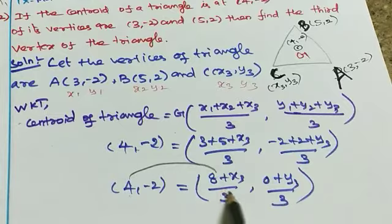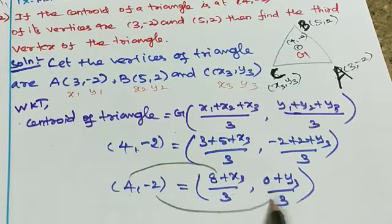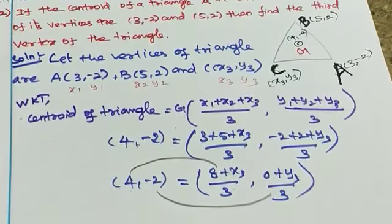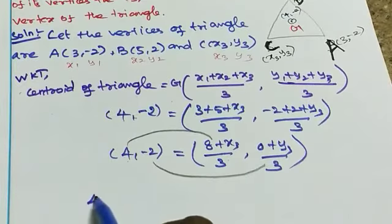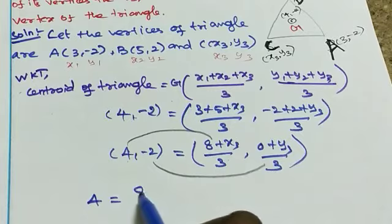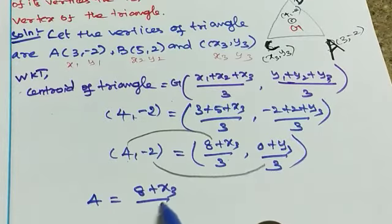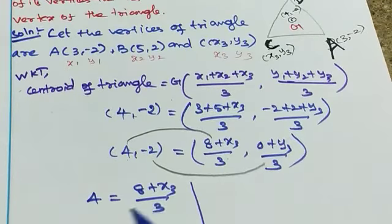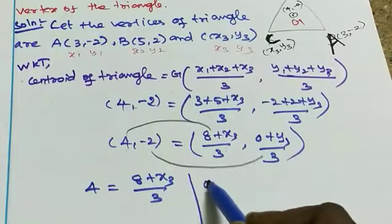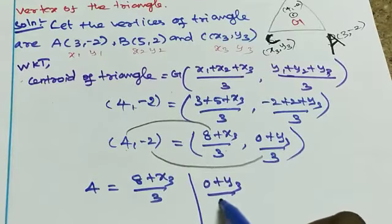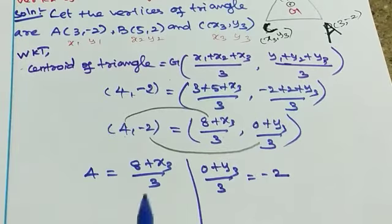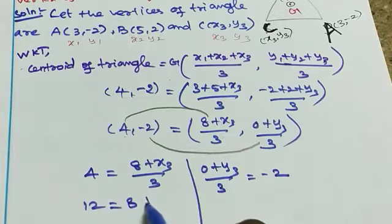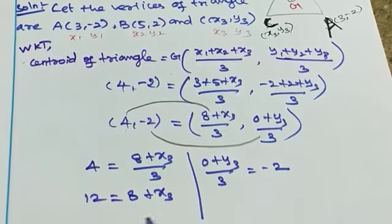Equating x-values: 4 = (8 + x3)/3. For y-values: y3/3 = -2. Taking cross product for x-coordinate: 4 × 3 = 12 = 8 + x3.